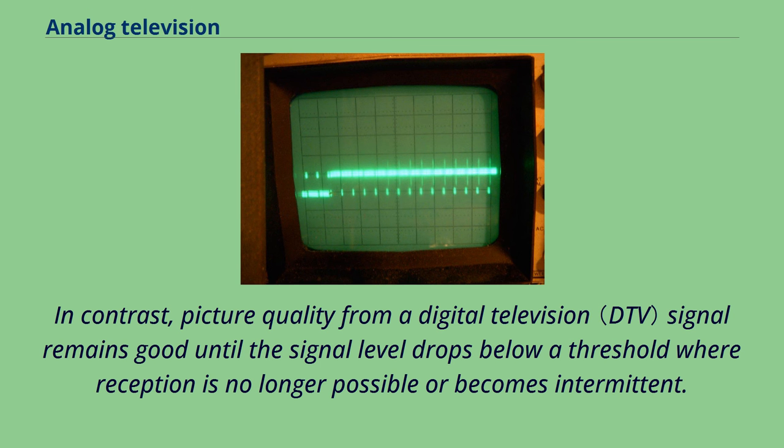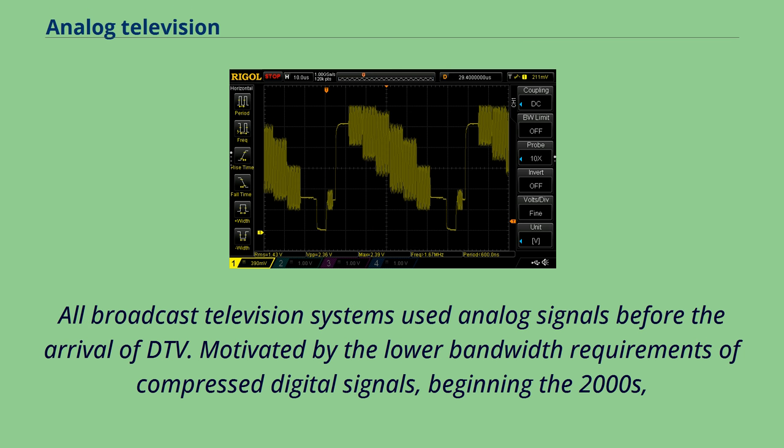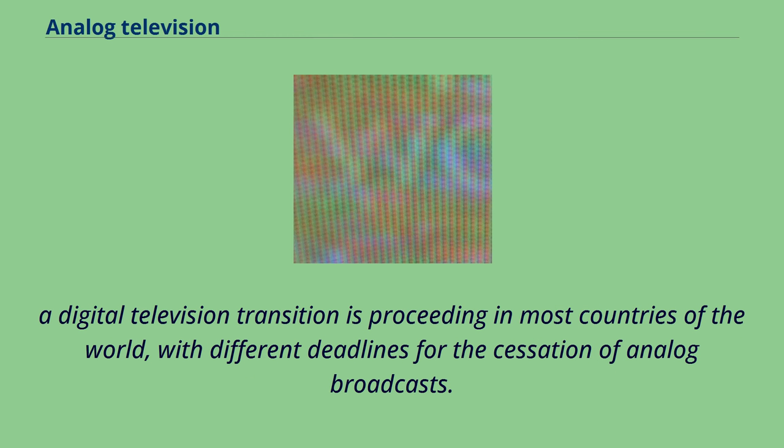Analog television may be wireless or can be distributed over a cable network as cable television. All broadcast television systems used analog signals before the arrival of DTV, motivated by the lower bandwidth requirements of compressed digital signals, beginning in the 2000s. A digital television transition is proceeding in most countries of the world, with different deadlines for the cessation of analog broadcasts.